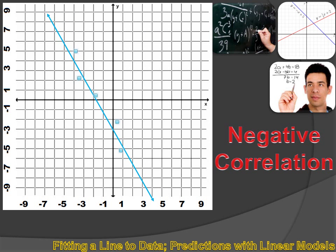This line represents a negative correlation. And it has a negative slope. As x increases, y decreases.